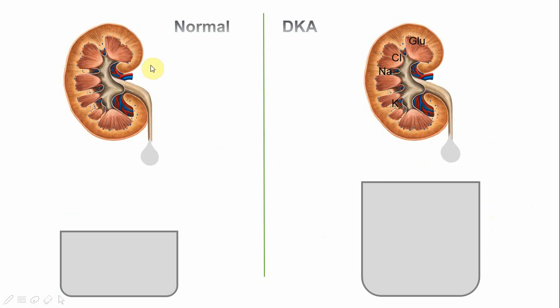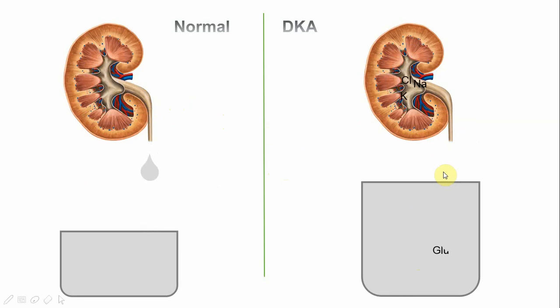In a normal kidney there is modest urine production after glomerular filtration and reabsorption. In DKA, urine output is much greater than normal because of the osmotically active glucose, which takes with it not only water but also sodium, potassium, chloride, calcium, magnesium, and other electrolytes. As a consequence, total body sodium, potassium, calcium, and other electrolytes are all decreased, resulting in a very complicated electrolyte abnormality.